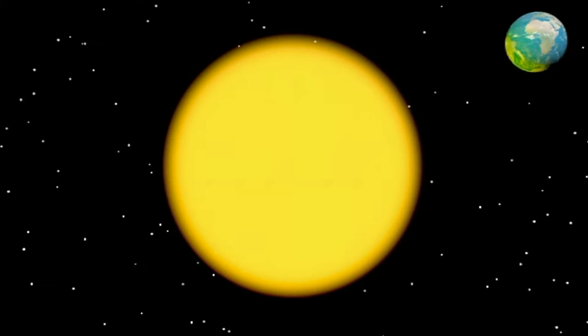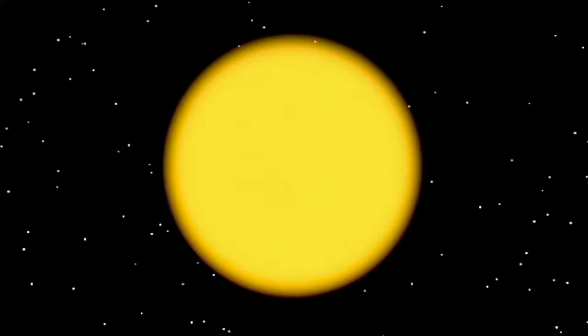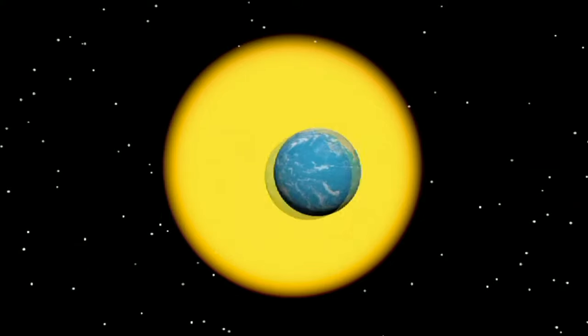While the Earth is spinning, it is also orbiting or revolving around the Sun. The Earth's path around the Sun causes us to see different parts of the sky during different seasons.